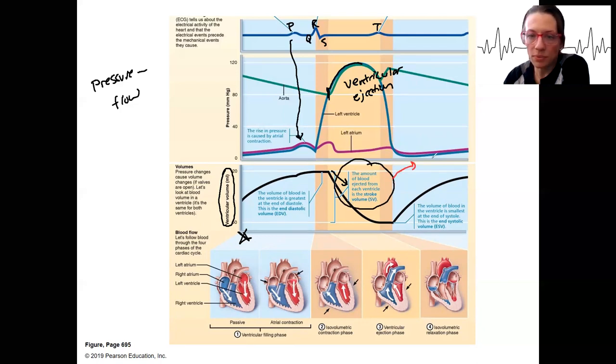We'll use it the most. Stroke volume is the amount of blood that's ejected during that stroke, during that contraction. And it's not equal exactly to the blood that we started with. It's going to be equal to that blood we start with,